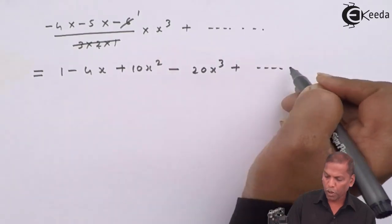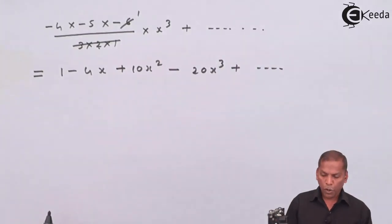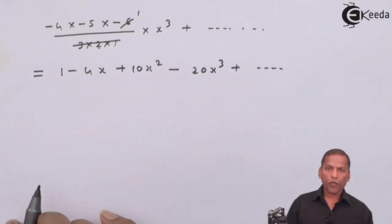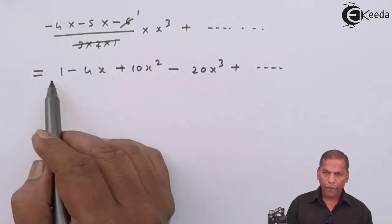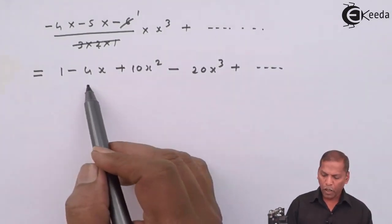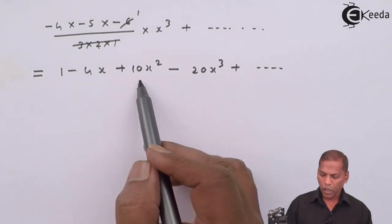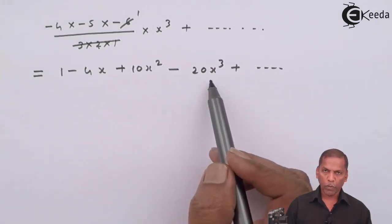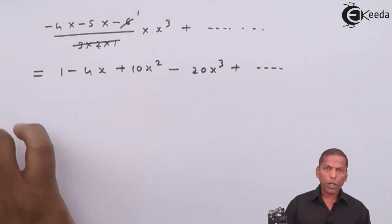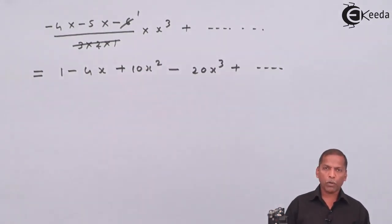And continuing on, so in this way we get first four terms as 1 minus 4x plus 10x squared minus 20x cubed plus continuing on. So this is the required solution for the given problem, thank you.